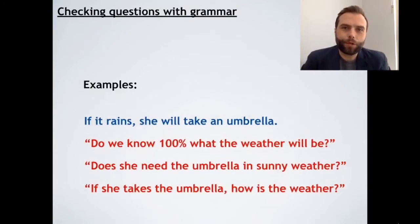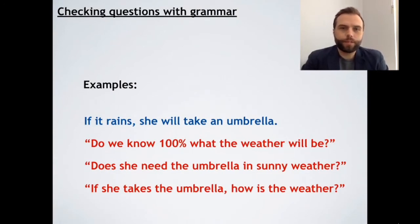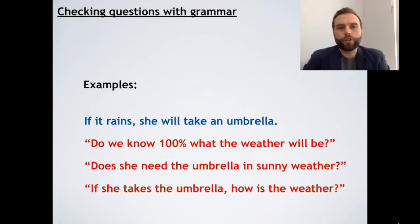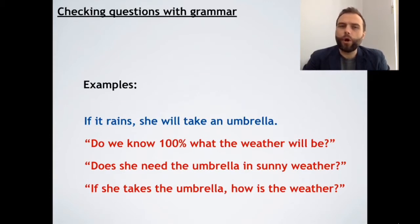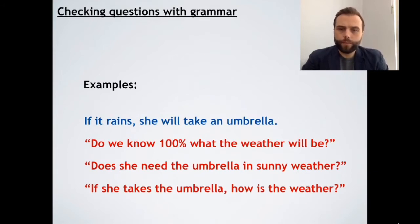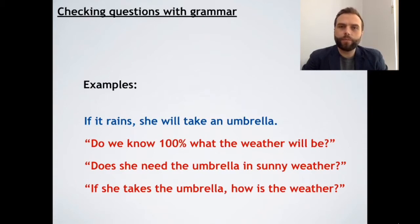Here's another example of target language: 'If it rains, she will take an umbrella.' This is a conditional sentence. Here are the checking questions. 'Do we know 100% what the weather will be?' — Are we 100% sure it's going to rain? The answer is no — maybe we're kind of 50% sure. 'Does she need the umbrella in sunny weather?' — No. 'If she takes the umbrella, how is the weather?' — The weather is rainy.